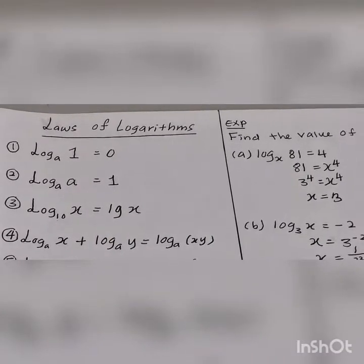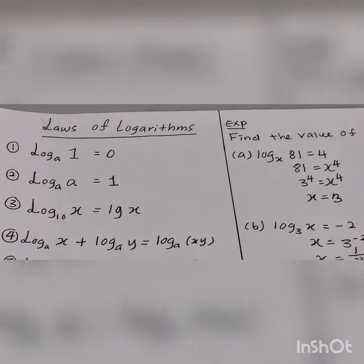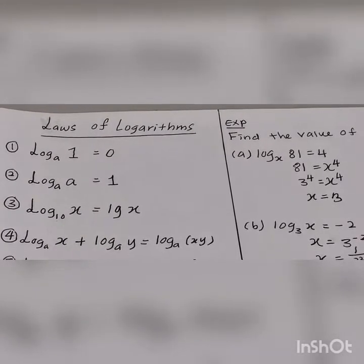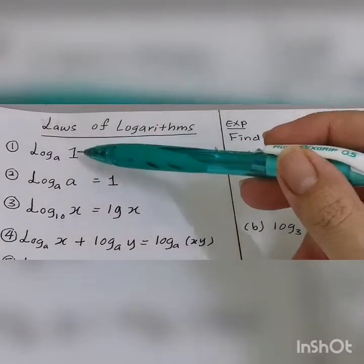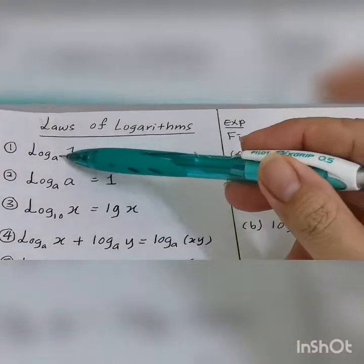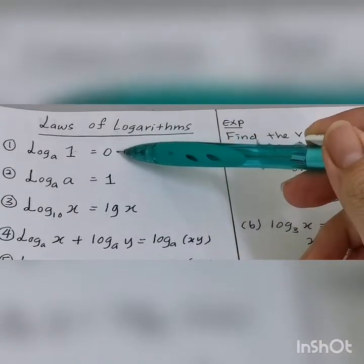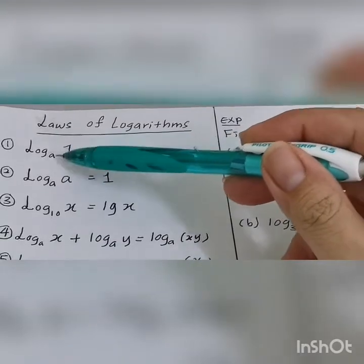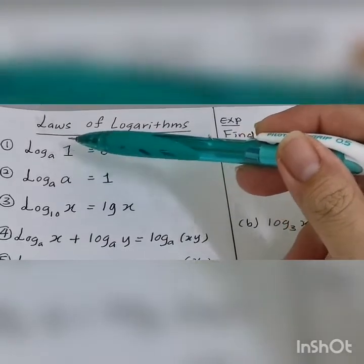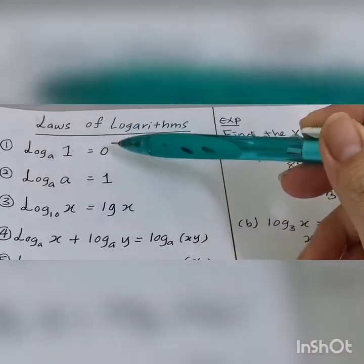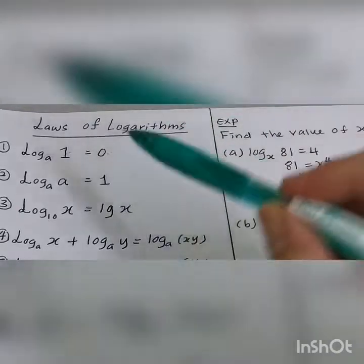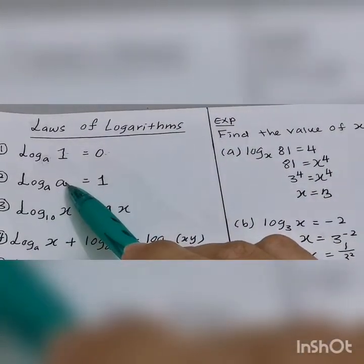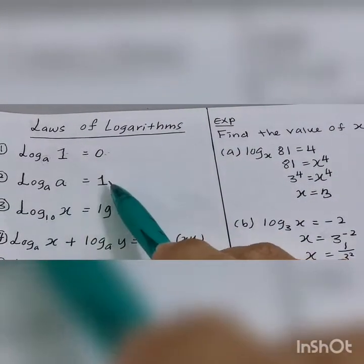Today we learn about logarithms. Before that we need to know what actually is the laws of logarithms. Number 1: log 1 becomes 0. Whether the base is 10 or other numbers, log 1 is also equal to 0. If the base and the number are the same or equal, they will become 1.